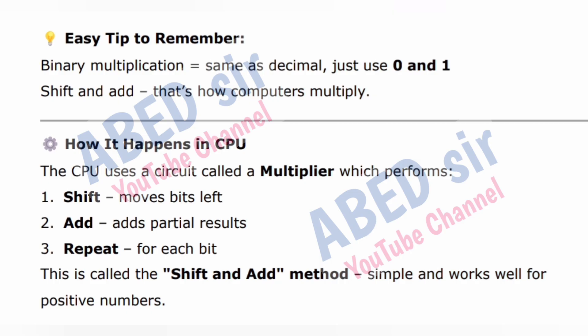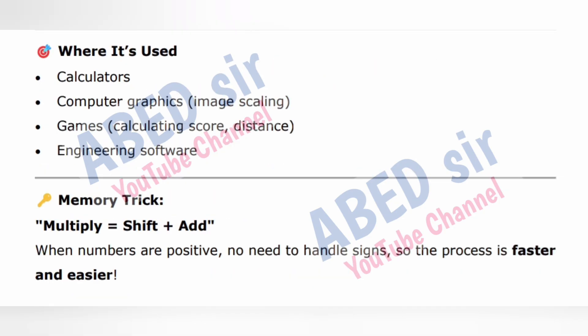Easy tip to remember: Binary multiplication equals same as decimal, just use 0 and 1 — shift and add. How it happens in CPU: The CPU uses a circuit called a multiplier which performs 1. Shift — moves bits left, 2. Add — adds partial results, 3. Repeat for each bit. This is called the shift and add method. Where it's used: calculators, computer graphics, games calculating score and distance, and engineering software. Memory trick: Multiply equals shift plus add. When numbers are positive, no need to handle signs, so the process is faster and easier.